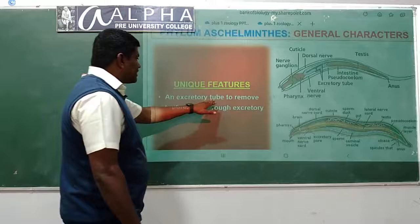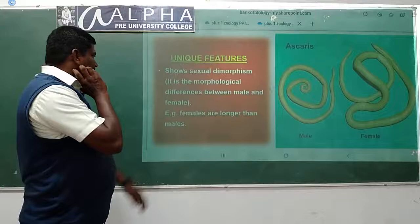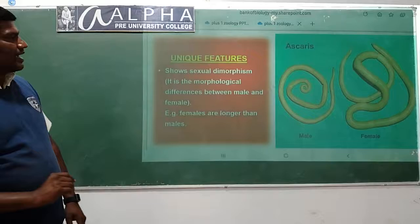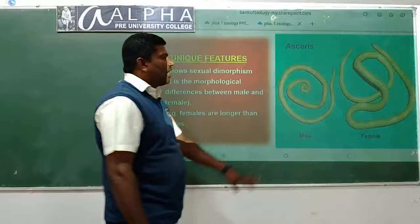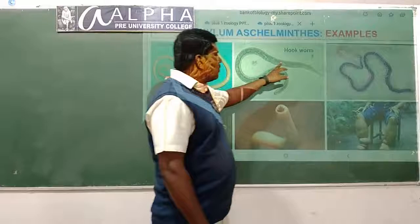An excretory tube to remove body waste through the excretory pore is present. Sexual dimorphism is clear - males and females are easily differentiated. Females are longer than males. Males have thick hook-like structures.